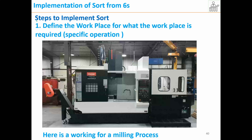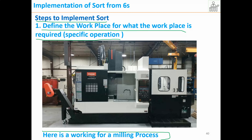As a recap: first, we define the workplace for its specific operation. In this example there is a milling process, so this is the department or workplace. What is required for a milling process? Milling cutters, tools, and machines related to milling should be there. If dispatch items are lying here, that is not the right place for them — this is an example.